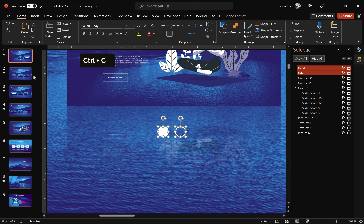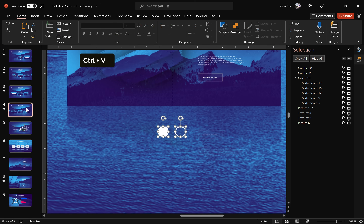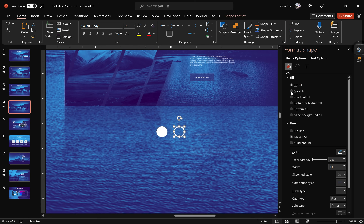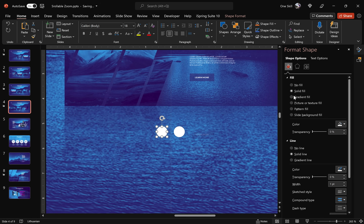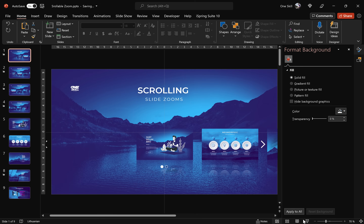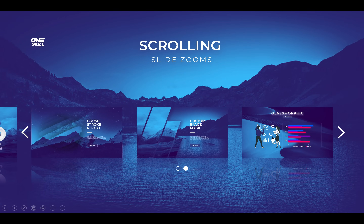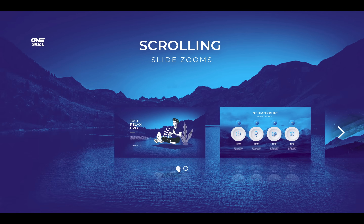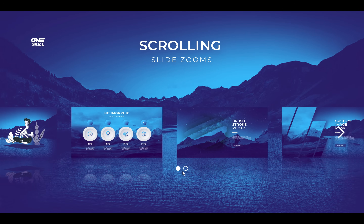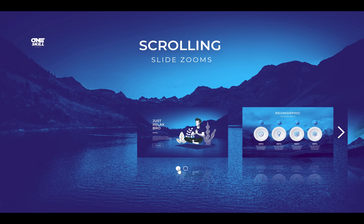The circles are ready. Select both of them, copy them, and paste them into the rest of the navigation slides. On slide number four, make sure the circle on the right side has the white fill — indicating we have reached the end of the navigation — and the circle on the left side has no fill. Let's check it out on full screen: the navigation bubbles work, the navigation arrows work as expected. Congratulations — now you know how to create this awesome scrolling slide zoom navigation in PowerPoint!